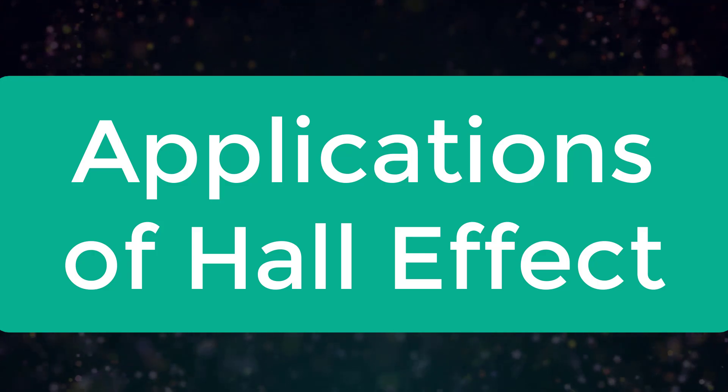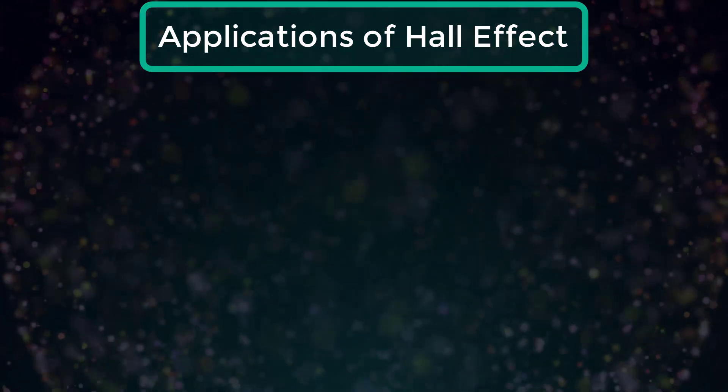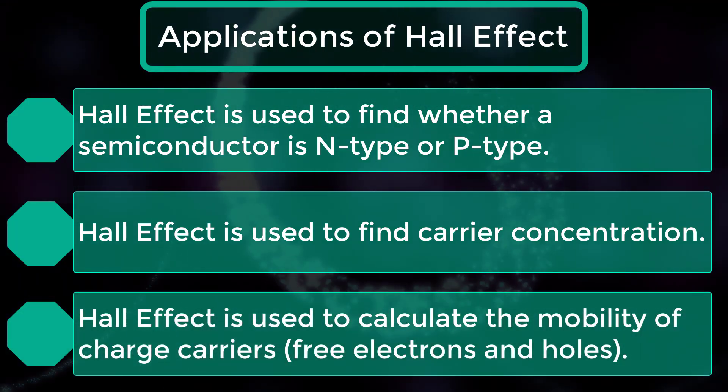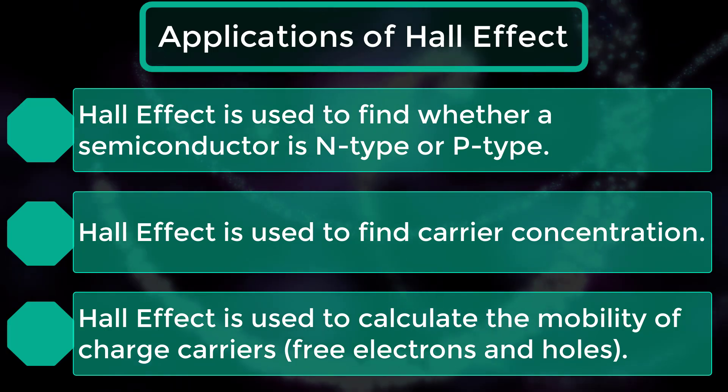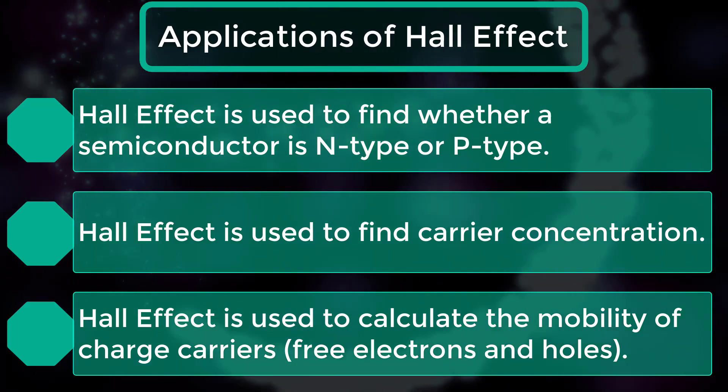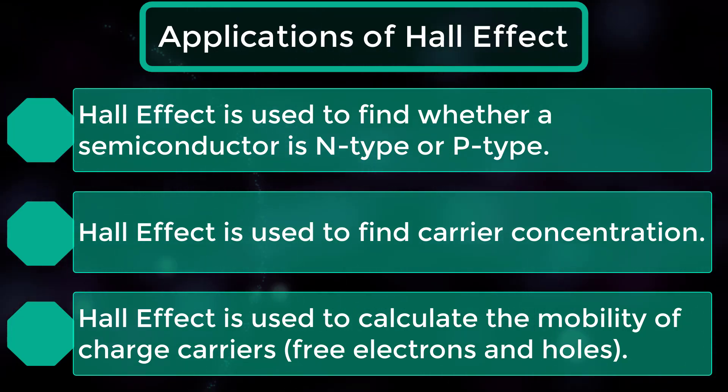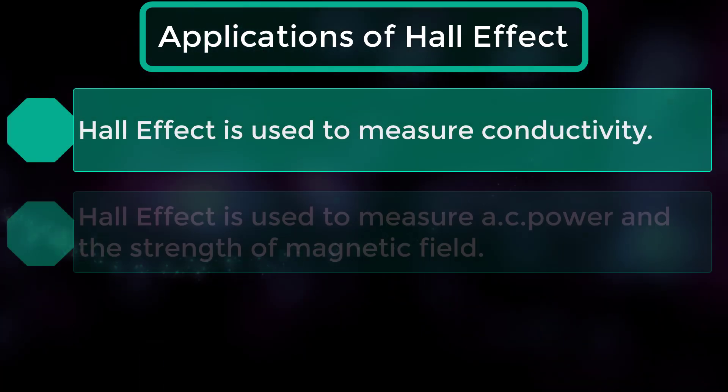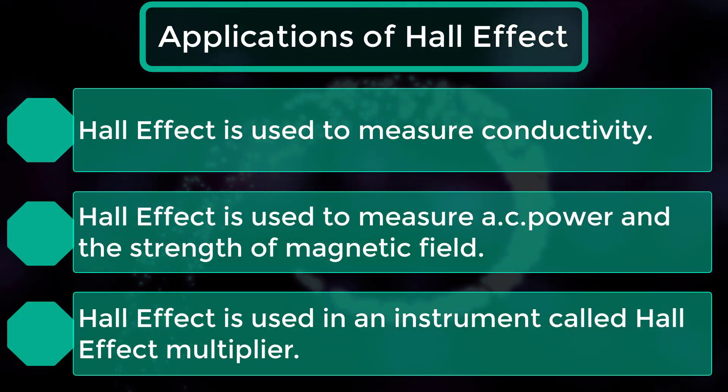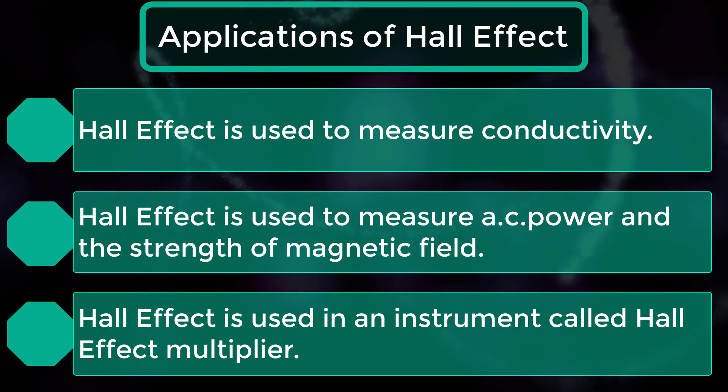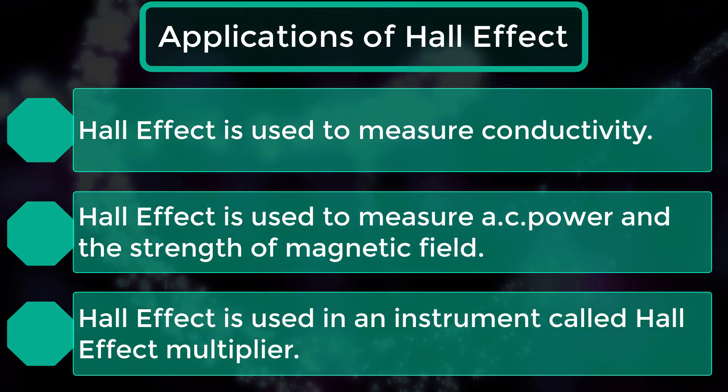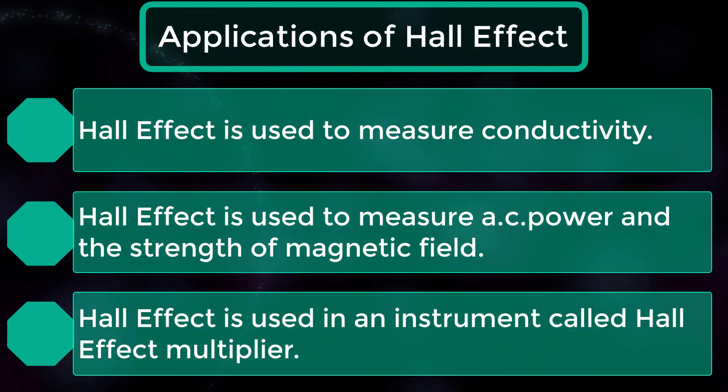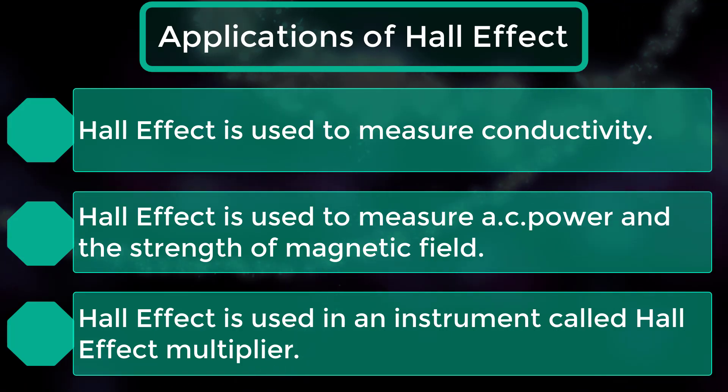Now, let's look into applications of Hall effect. It is used to find whether a semiconductor is n-type or p-type. It is used to find carrier concentration. Hall effect is used to calculate the mobility of charge carriers, free electrons and holes. It is also used to measure conductivity. It is used to measure AC power and the strength of magnetic field. Hall effect is used in an instrument called Hall effect multiplier, which gives the output proportional to the product of two input signals.